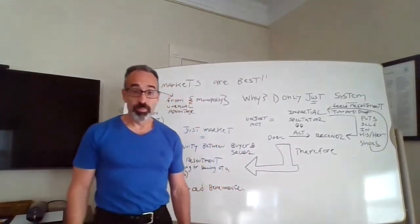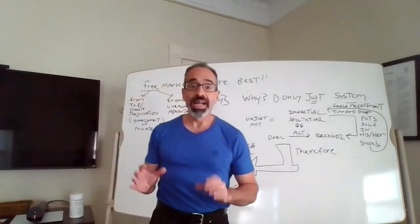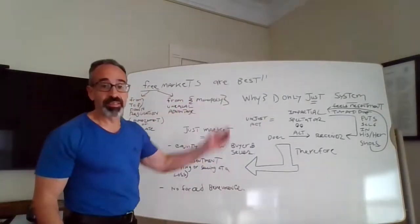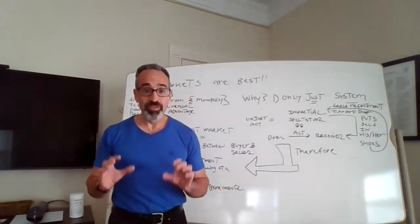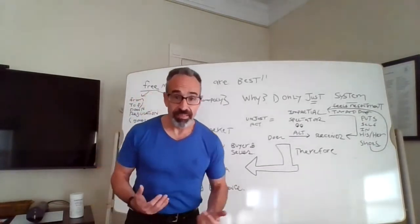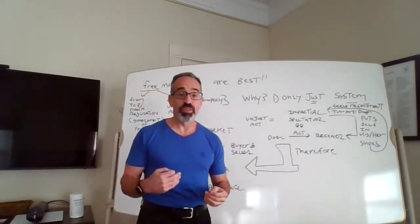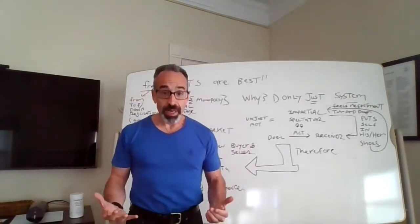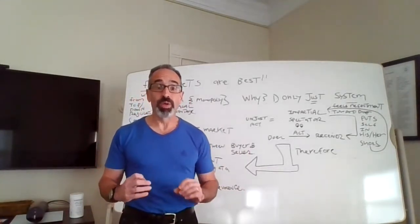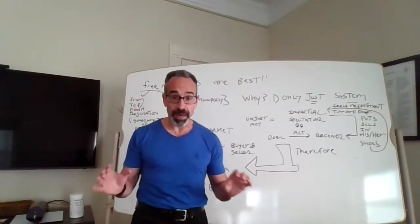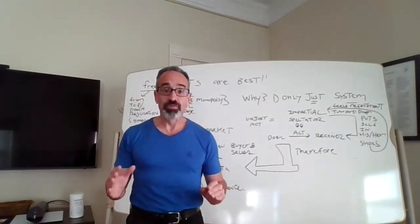Hi, welcome to the lecture on Adam Smith and free markets. Today we're going to look at why Adam Smith believes that free markets are the best types of markets — best in two senses: beneficial, and also moral or just. He's going to argue that free markets are the most just type of economic system, and also that they will produce the most overall prosperity for everybody within the system.